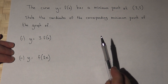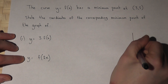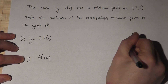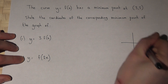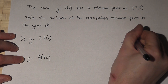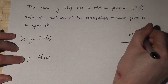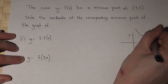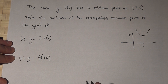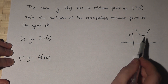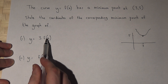In this question we're given some unknown function, but we know that this unknown function has a minimum point at the coordinate (3, 5). So it may look something like this — just a sketch of the graph. And the question is, what happens to that minimum point for the following two transformations?